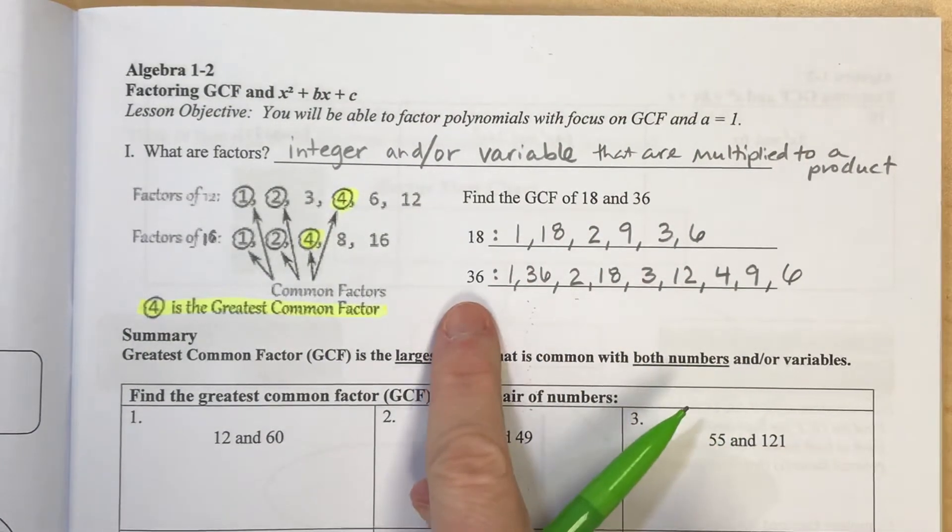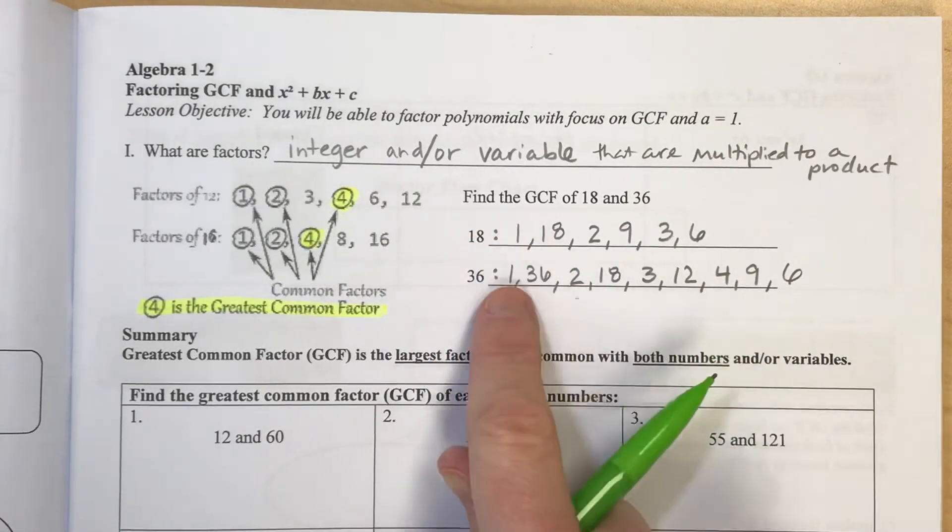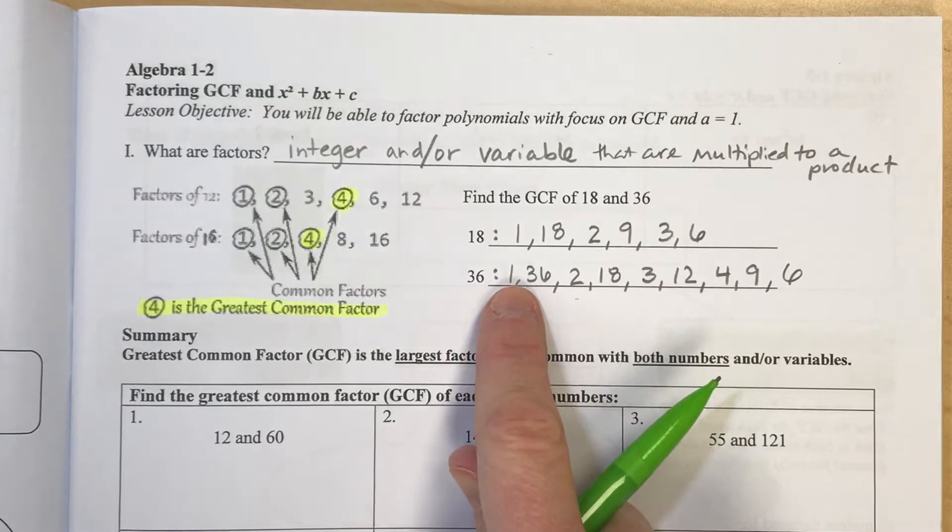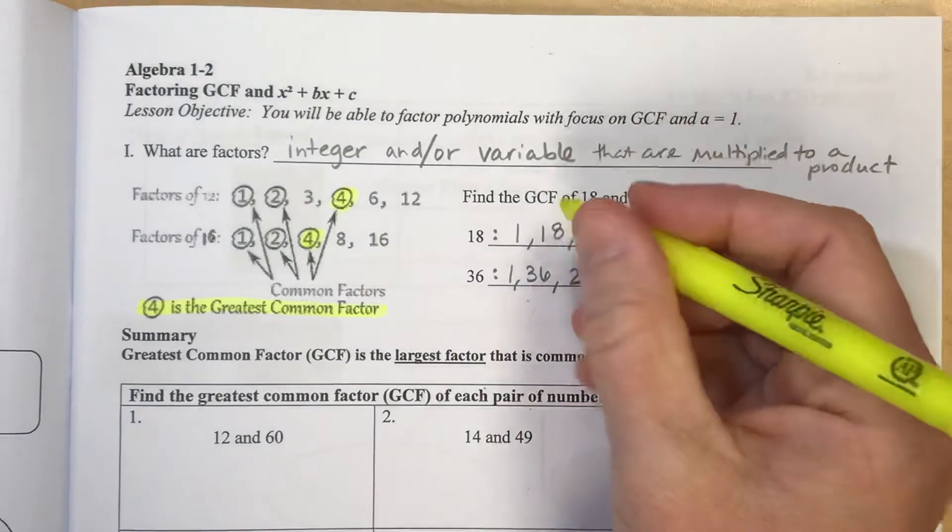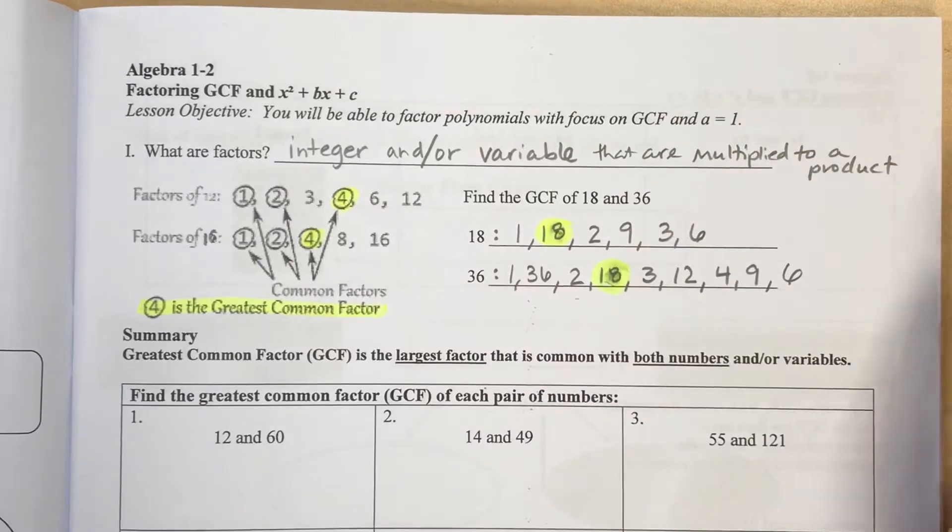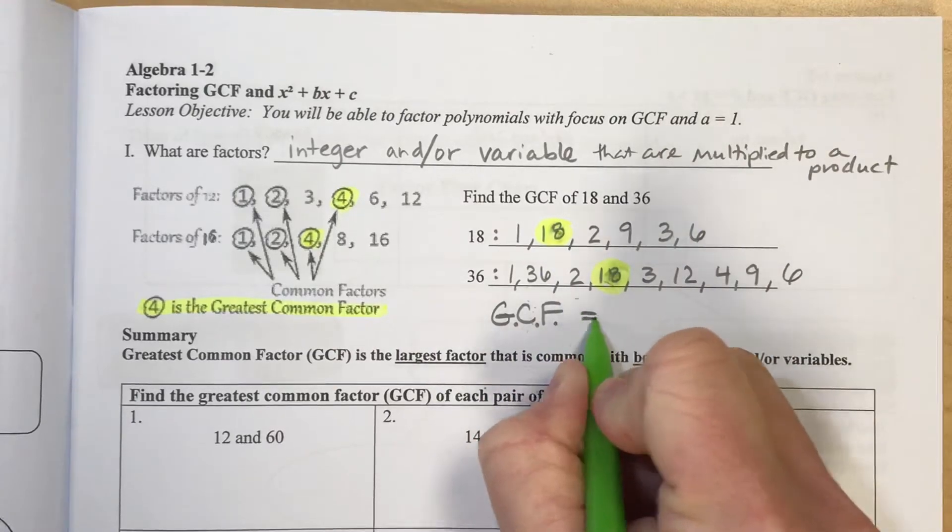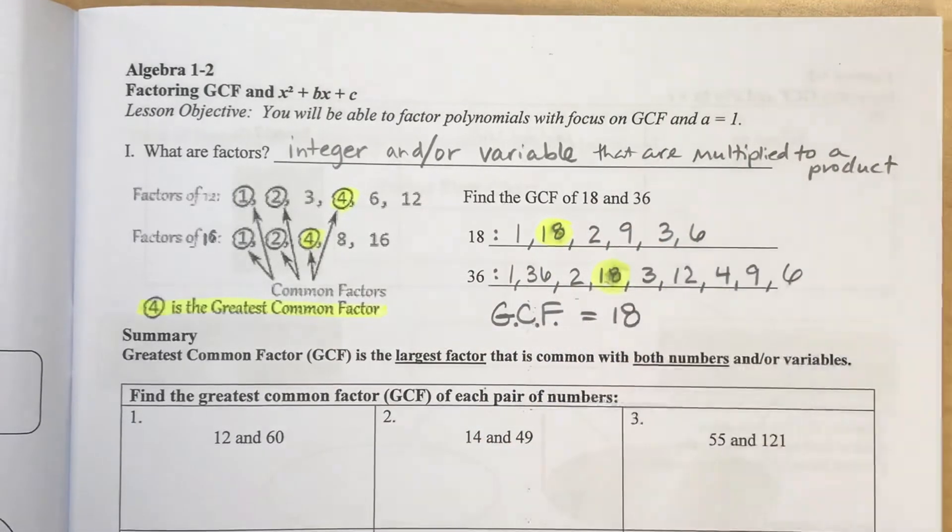So now what I want to do is compare the number that is the largest in both lists. And typically what we want to do is find a number larger than 1. And I notice that 18 is in both of these lists. And so this would be called your greatest common factor. If I abbreviate GCF, that would be 18. And that's the biggest number that goes into both 18 and 36.